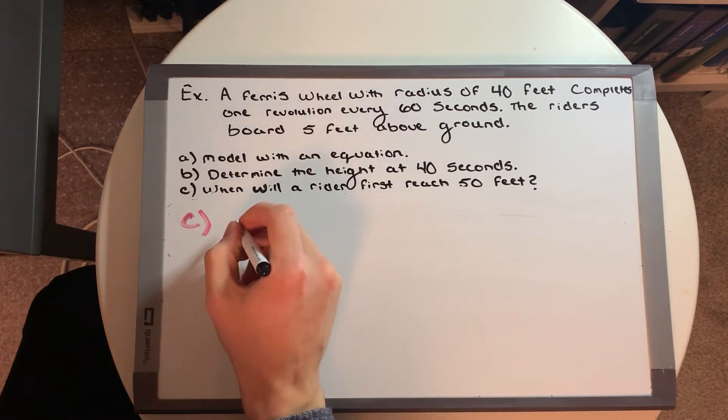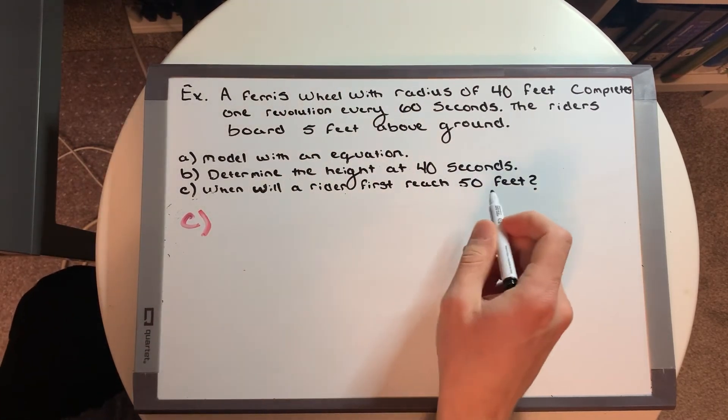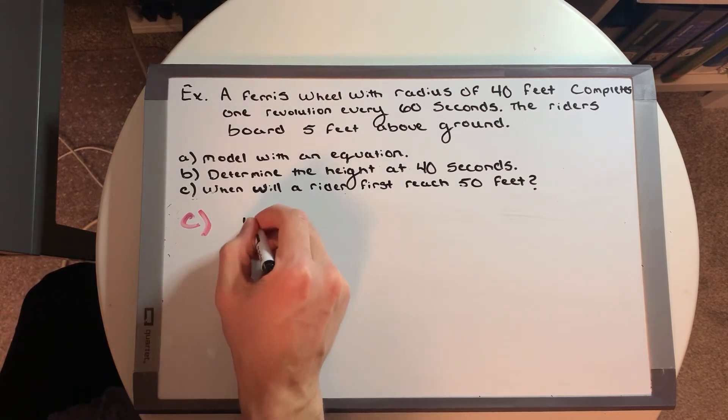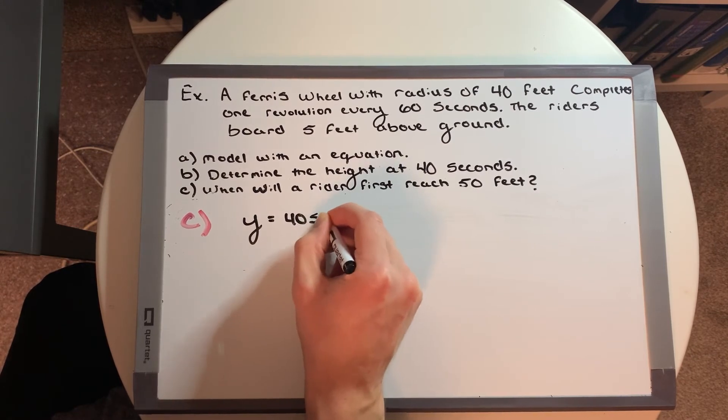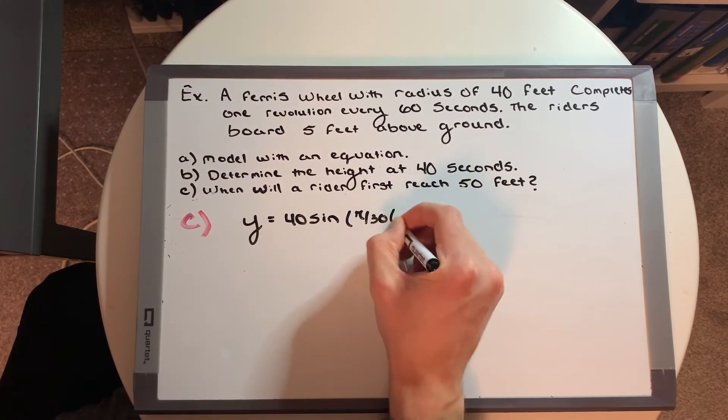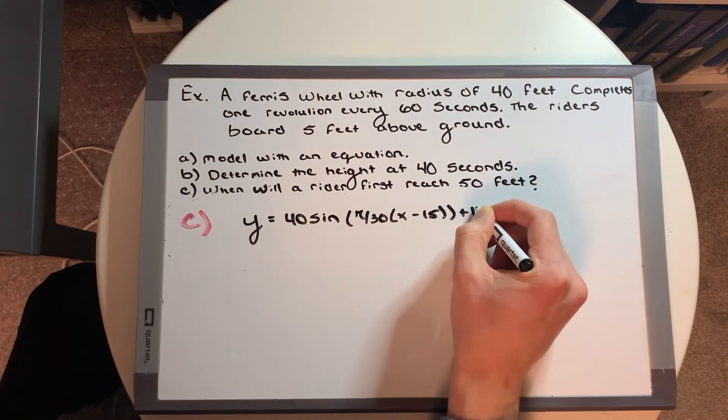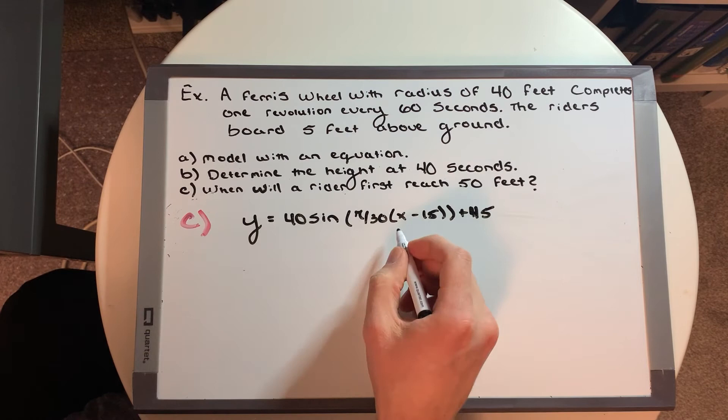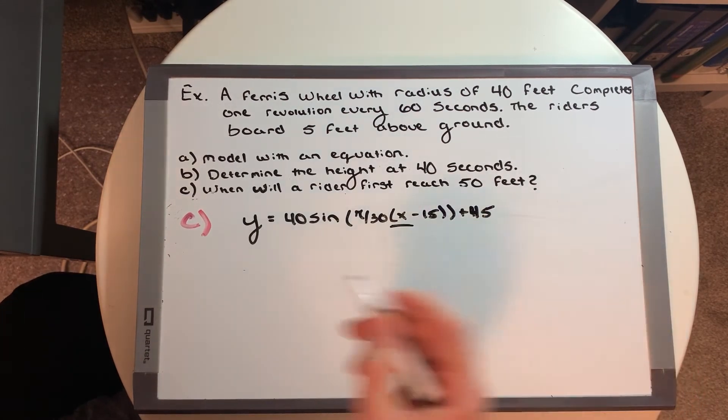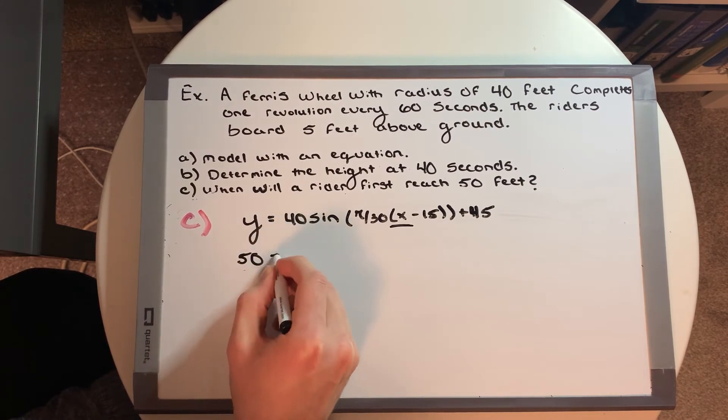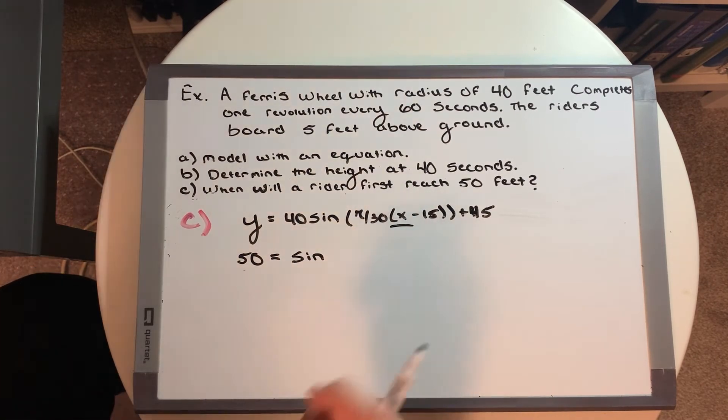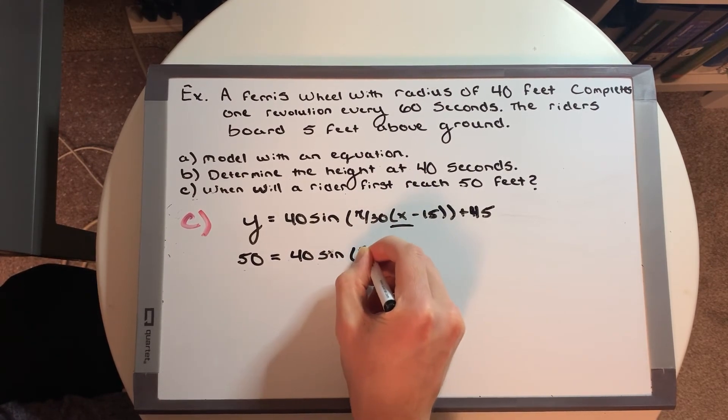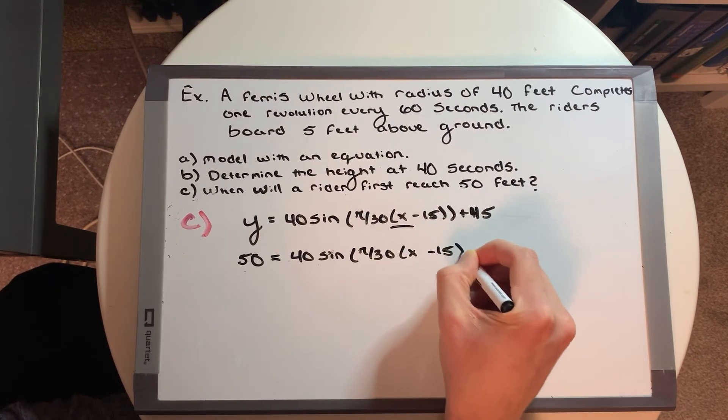Okay, so what we're going to do in this equation is that instead of subbing in some time value, or some x value in B, now we're subbing in an h value or a y value this time. So from our general equation, we said that y is equal to 40 sine pi over 30, x minus 15, plus 45. And now, when will the rider reach 50 feet? They're asking for what time value or what x value. So technically, this is going to look like 50 is equal to 40 sine pi over 30, x minus 15, plus 45.